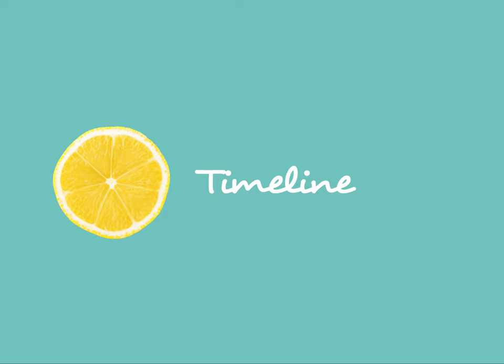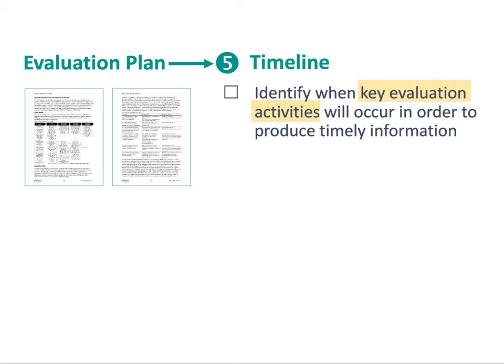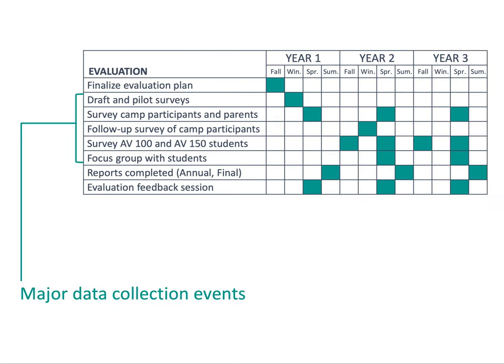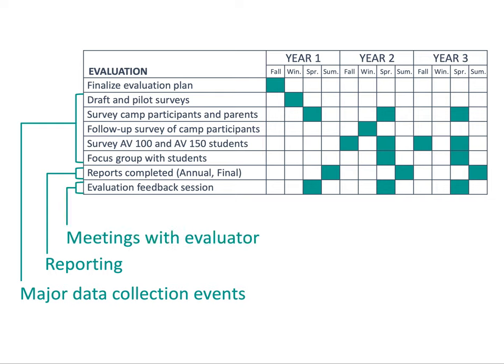Finally, you need to convey a realistic timeline for your evaluation. In your section, you need to identify when the key evaluation activities will take place and show that there's a concrete plan for getting timely information from the evaluation. A matrix is a great way to do this. By key activities, I mean things like major data collection events, reporting, or meetings between evaluators and the project team or other stakeholders.